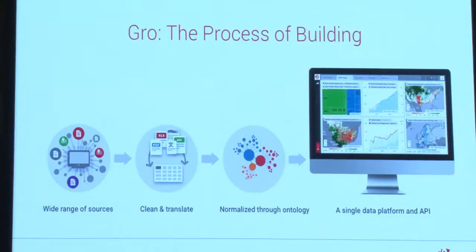Once data has been cleaned, it goes through a transformation process — a translation engine we've built called an ontology. Think of an ontology as a dictionary. Our dictionary has over 20 million terms related to global agriculture that are defined. These terms can relate to climate, but also to demographics, and everything gets normalized through this ontology.